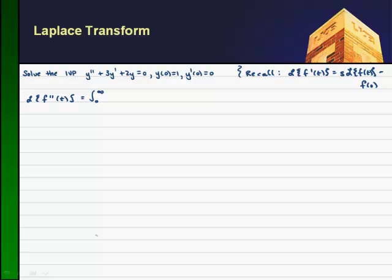Let's go back to the definition. We get the integral from zero to infinity of e to the minus st times f double prime of t dt. We're going to let u equal e to the minus st, du becomes minus s e to the minus st dt. dv picks up the f double prime of t dt, and of course v becomes the integral of f double prime, or just f prime of t.